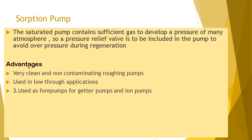The advantages of sorption pumps are: first, they are very clean and non-contaminating roughing pumps — unlike oil-sealed rotary vane pumps, no oil is used, making them dry pumps. Second, they are used in low-throughput applications. Third, they are used as fore-pumps for getter pumps and ion pumps.